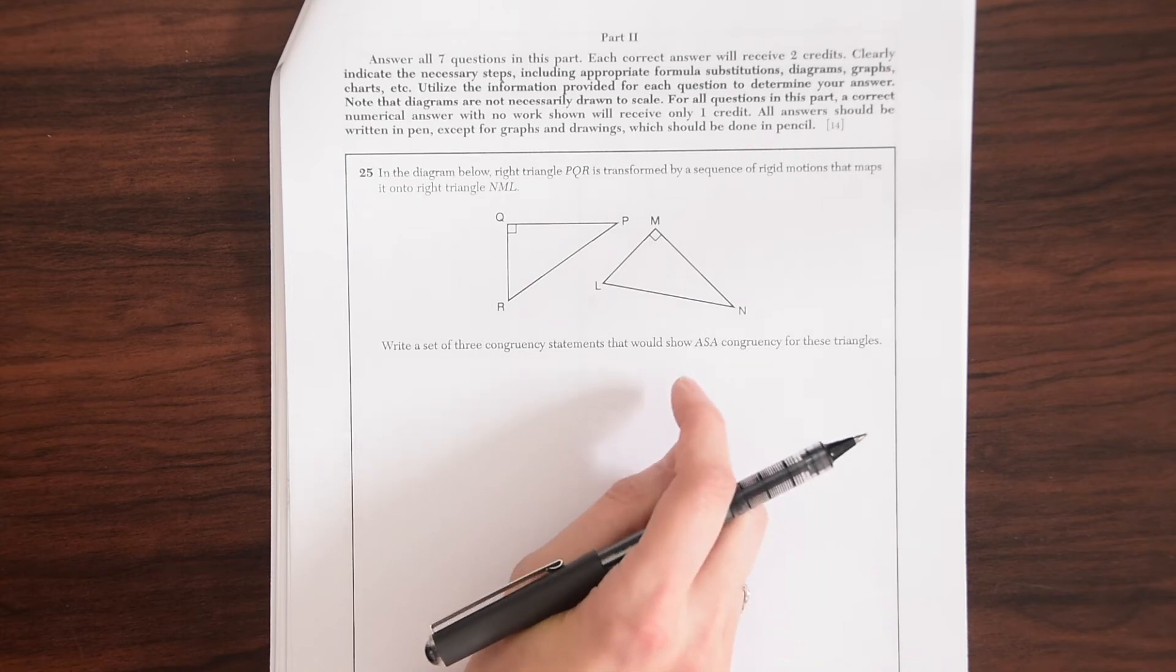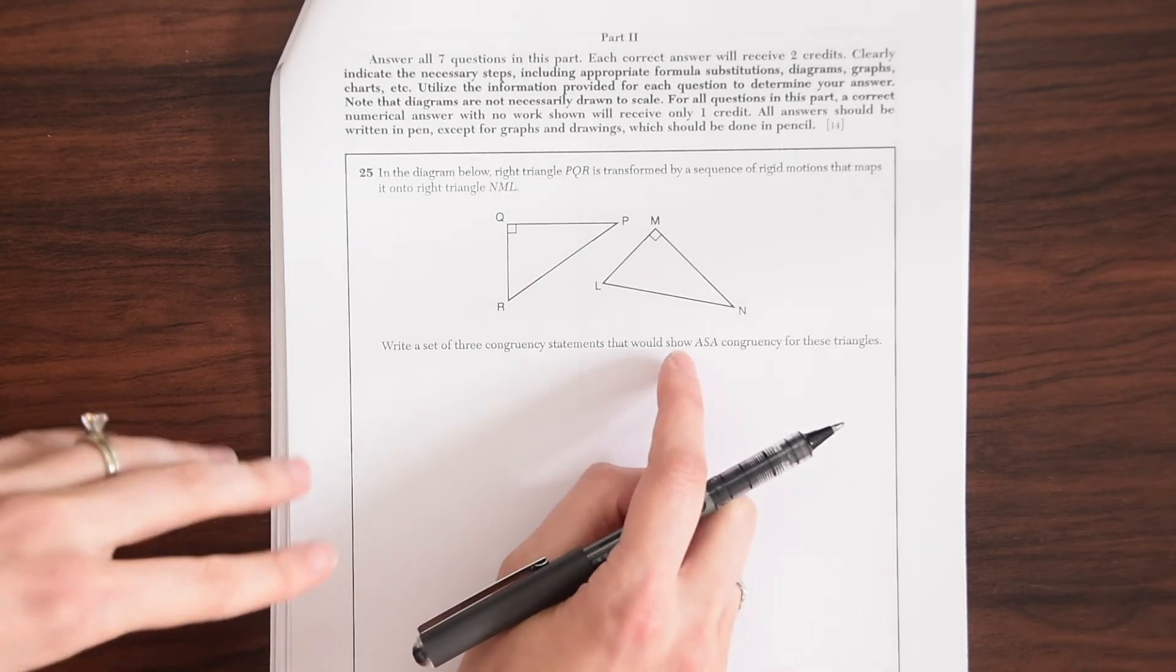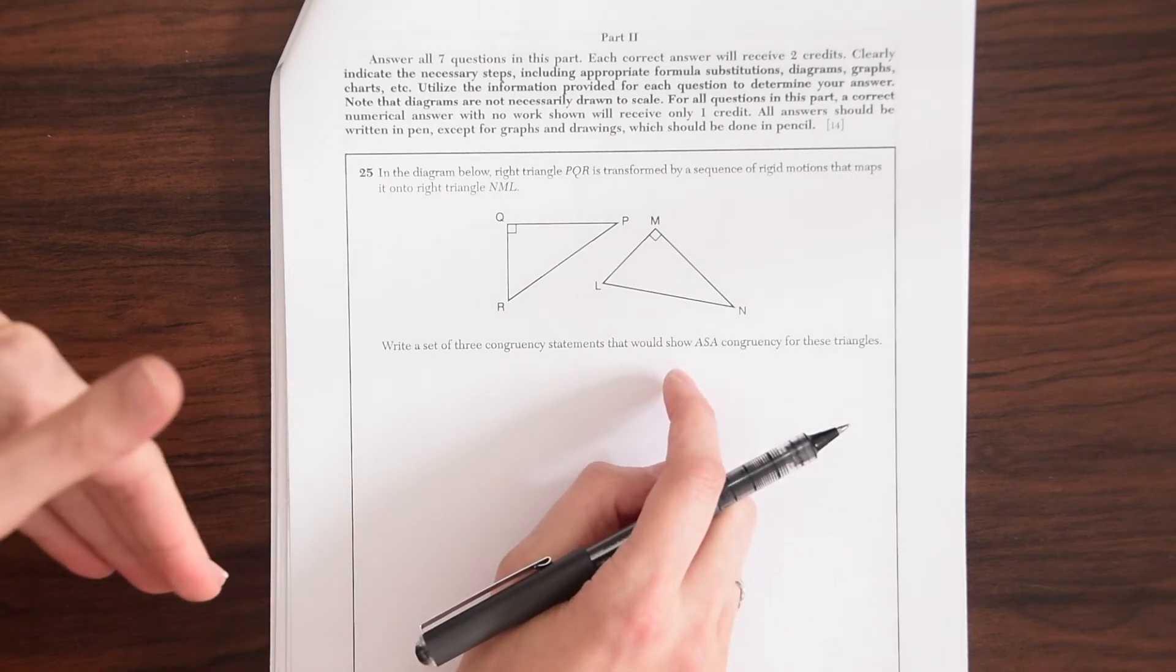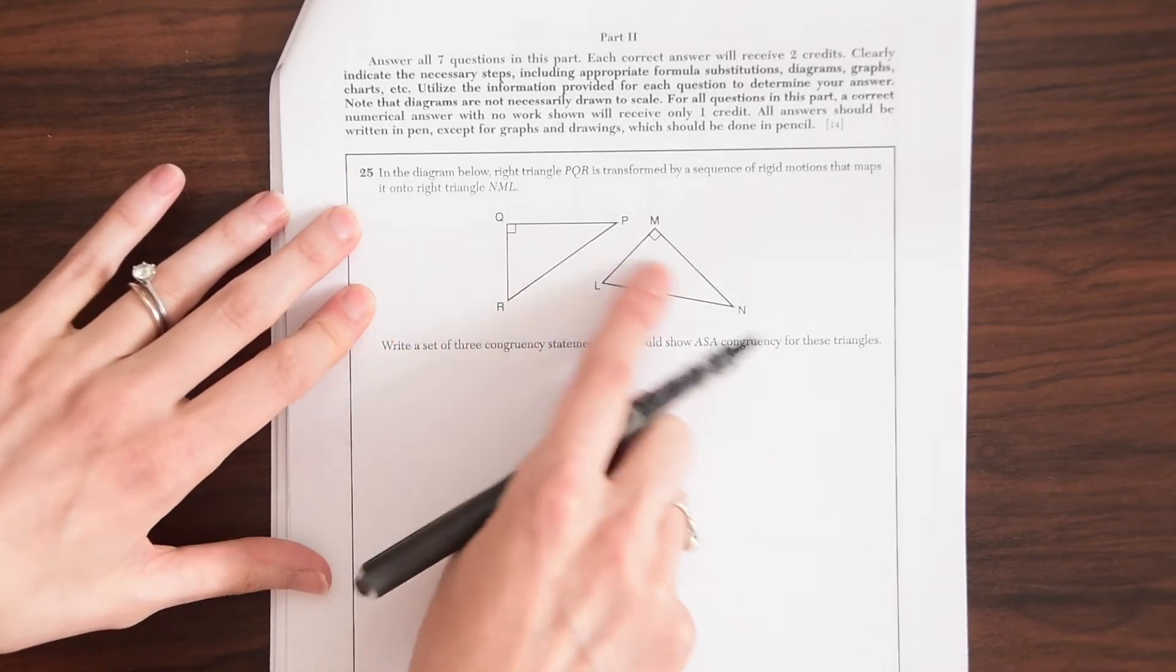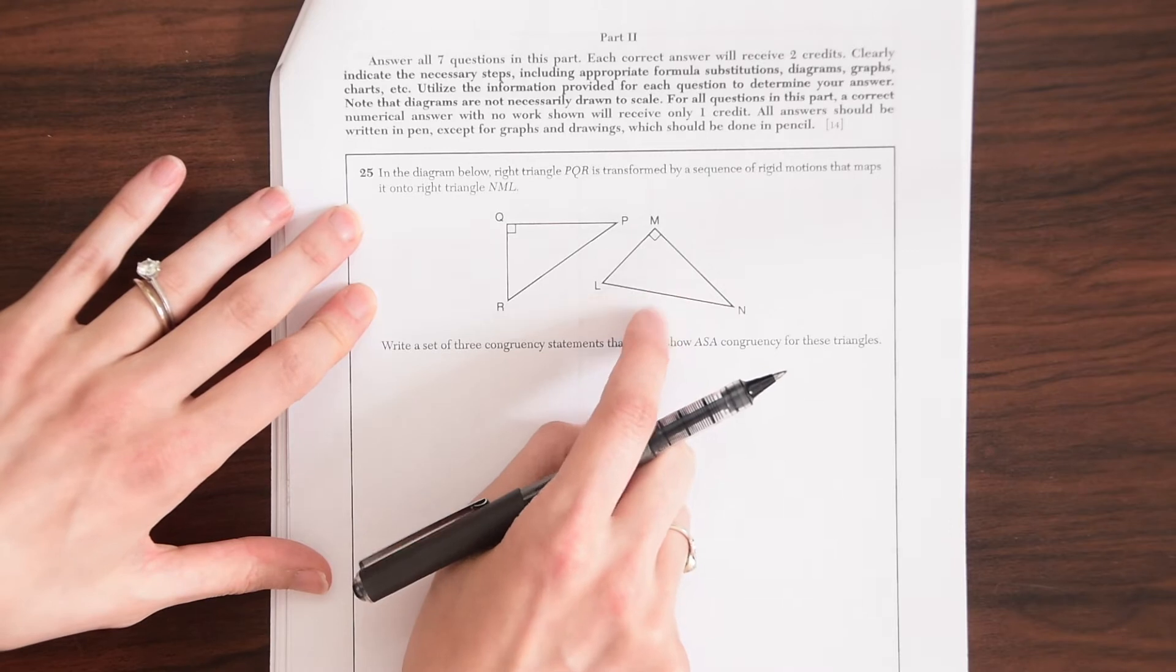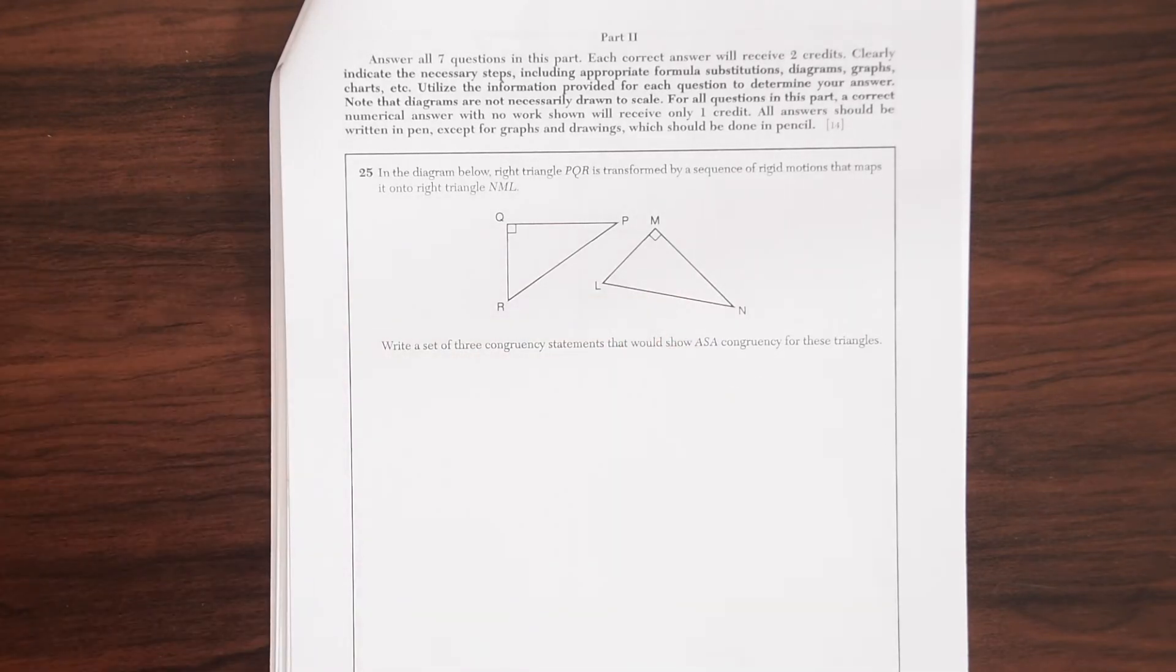Write a set of three congruency statements that would show ASA or angle-side-angle congruency for these triangles. So all we need to do here is identify an angle, a side, and an angle and state that they are congruent to each other by comparing these two triangles. So that should be really simple, right?